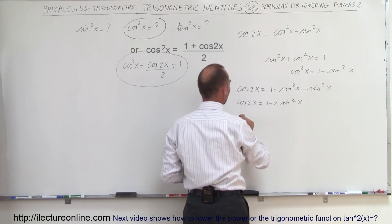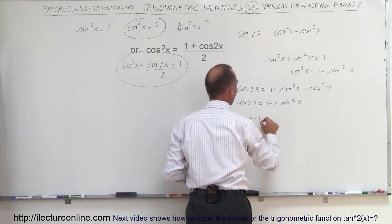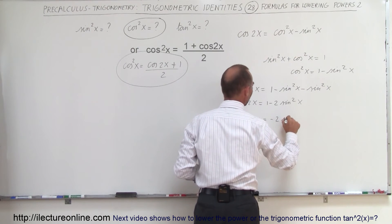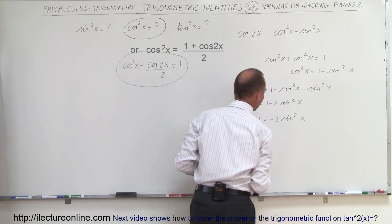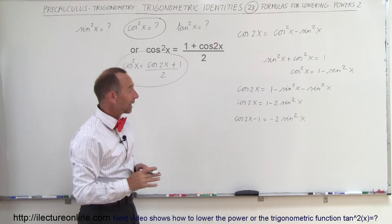Moving the one across the other side, we end up with the cosine of 2x minus 1 equals minus 2 times the sine square of x. And then we divide both sides by negative 2.